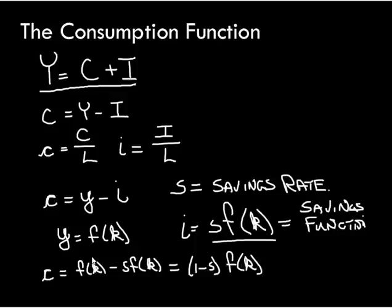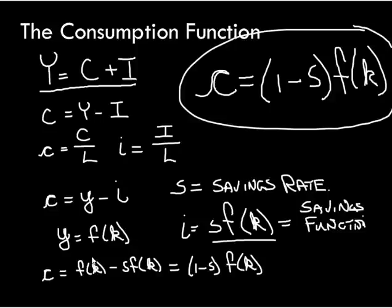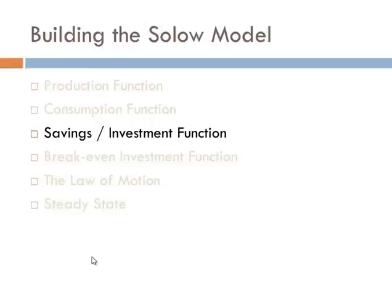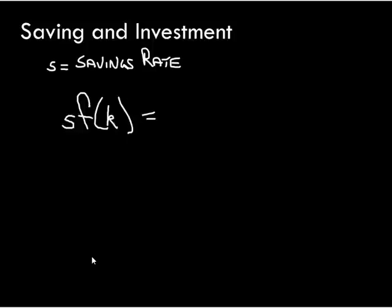So we have our production function, and now we have a consumption function: consumption per worker equals (1 minus the savings rate) times the per worker production function. That's the second piece to our puzzle. Next on our journey is the savings or investment function, which we've already largely developed. Little s is the savings rate — the percentage of income used for savings, which in equilibrium turns into investment. So the savings/investment function is s times f of little k, which equals little i.